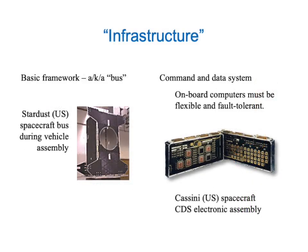Our robot spacecraft is also going to have what we might call infrastructure — it's going to need a basic framework on which we can attach all the other parts of it. This is called the bus. That picture on the left is the bus of the Stardust spacecraft, which was intended to sample a comet. We also need a kind of command and data system — an onboard computer, or presumably more than one computer, to be in charge and to direct the experiments and to record data. They need to be very flexible and very fault tolerant, and very resistant to radiation environments.